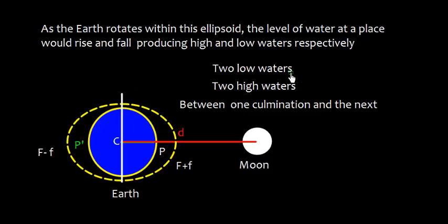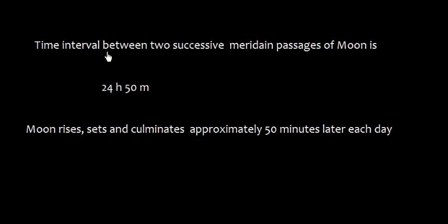So there will be two low waters and two high waters between one culmination of the moon to the next culmination, also called meridian passage. That means moon is here, and after approximately 24 hours, moon will be again here. So from one meridian passage of moon to another meridian passage, there will be two low waters and two high waters.